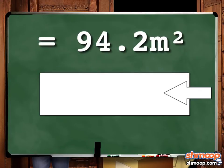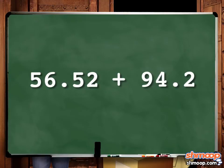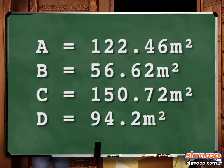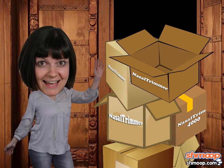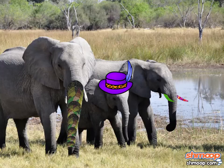To get the total surface area, we just add our two numbers together. 56.52 plus 94.2 equals 150.72. So the answer is C. Sounds like a lot of cardboard — good thing you've bought quite a few nasal hair trimmers over the years. The trunk warmer is knitted, the tube is made, and off it goes. We hope your elephant appreciates all the hard work you did.